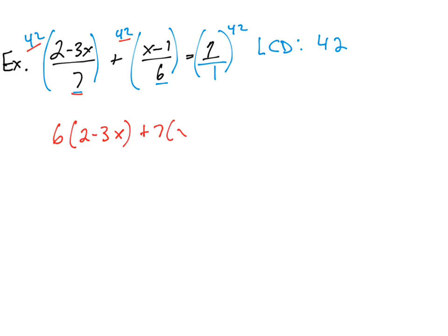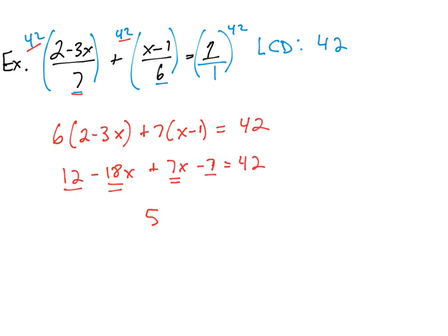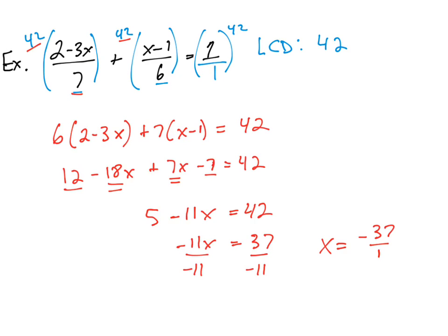42 divided by 6 gives 7, so plus 7x minus 1, and then 1 times 42 is 42. From here we multiply everything out and simplify each side independently. We have 12 and negative 7 giving 5, and negative 18x plus 7x giving negative 11x, equal to 42. Subtracting 5 from both sides gives 37, then dividing both sides by negative 11 gives x equals negative 37 over 11.